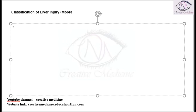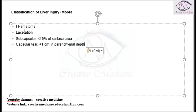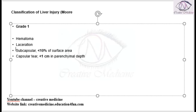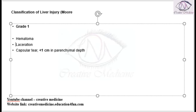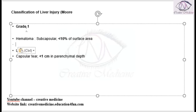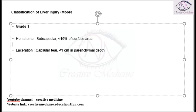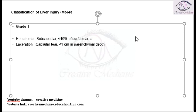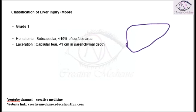Now we have Grade 1. In Grade 1, you have two things. If the hematoma is subcapsular and involves less than 10% of surface area, and if laceration is seen as a capsular tear of less than 1 cm parenchymal depth, then that is Grade 1.